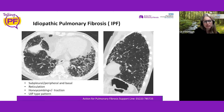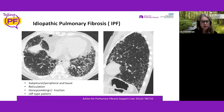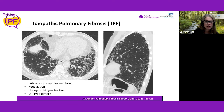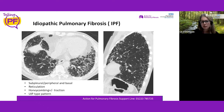This scan shows idiopathic pulmonary fibrosis with the usual interstitial pneumonia pattern. We can see subpleural honeycomb cysts at the edge of the lung, thickened mesh-like reticulation lines, and airways getting dragged out — traction dilatation. The sideways view shows it worse at the front and back towards the bottom, which is the classic distribution.